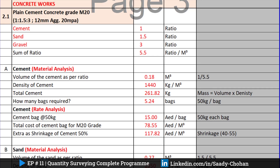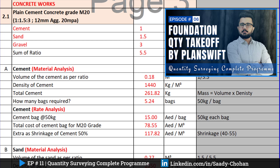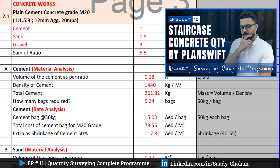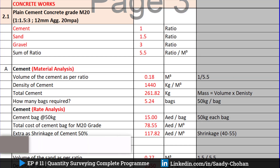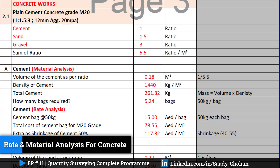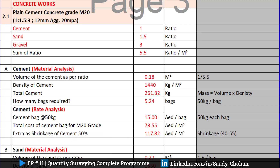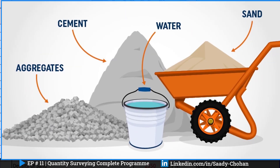Welcome to episode 11 of the Quantity Surveying Program. I hope you have already seen the previous episodes of our villa project. In the previous episodes we covered quantity takeoff for columns, beam, slab, and staircase. Today we'll talk about how to get the unit rate for RCC and PCC items of BOQ by doing rate analysis and material analysis for concrete work.